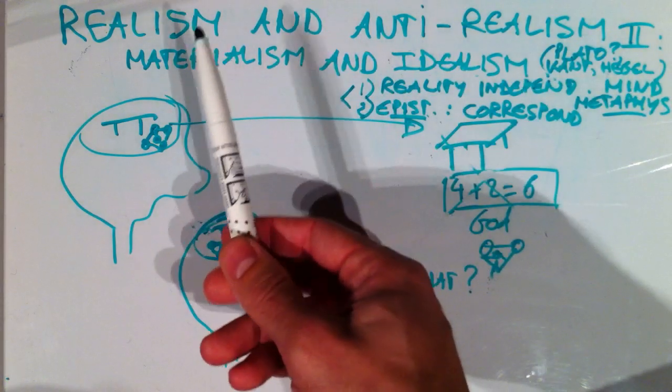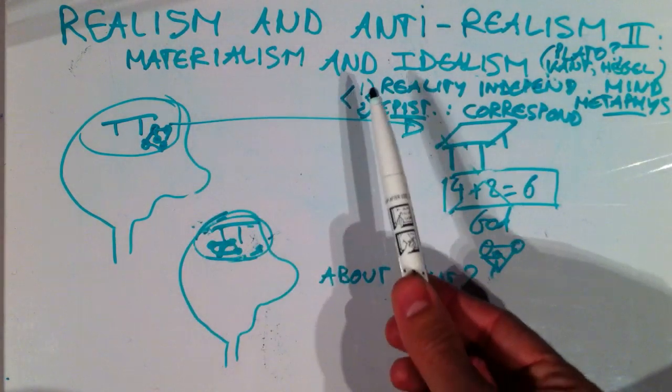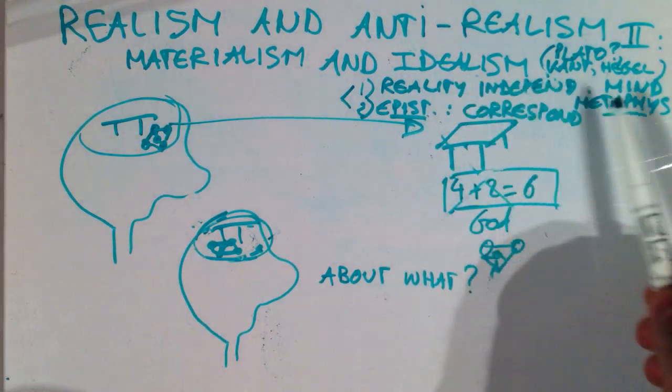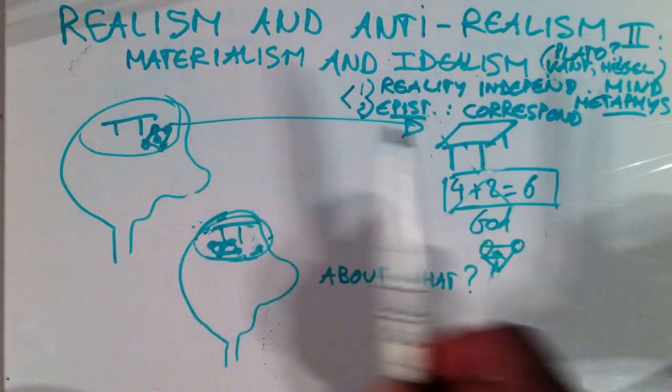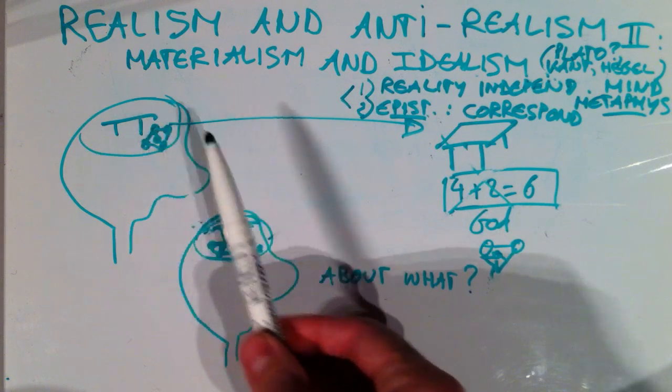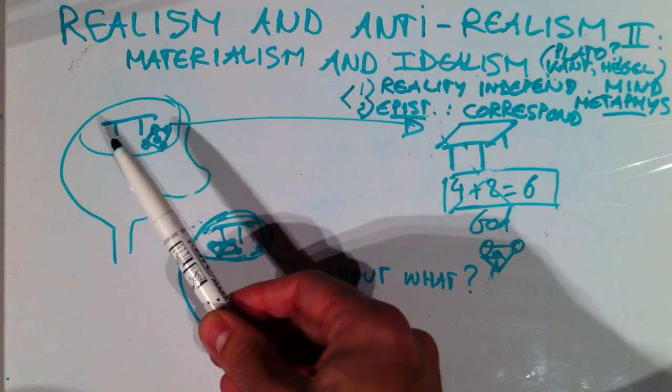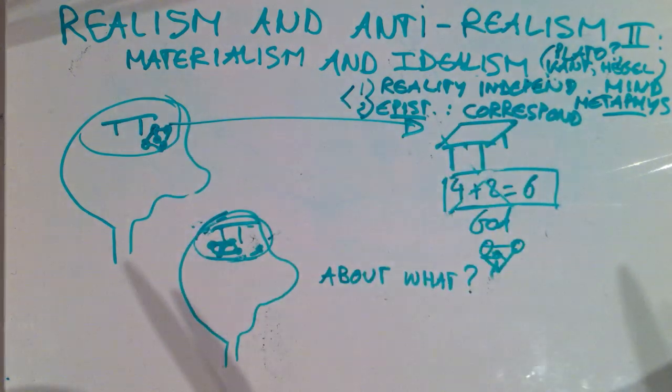Let's just rehearse for a second what realism was about. Two components. First, there is a reality independent of our minds, our thinking. Secondly, our thinking is really about this reality. Our beliefs really correspond to this reality.